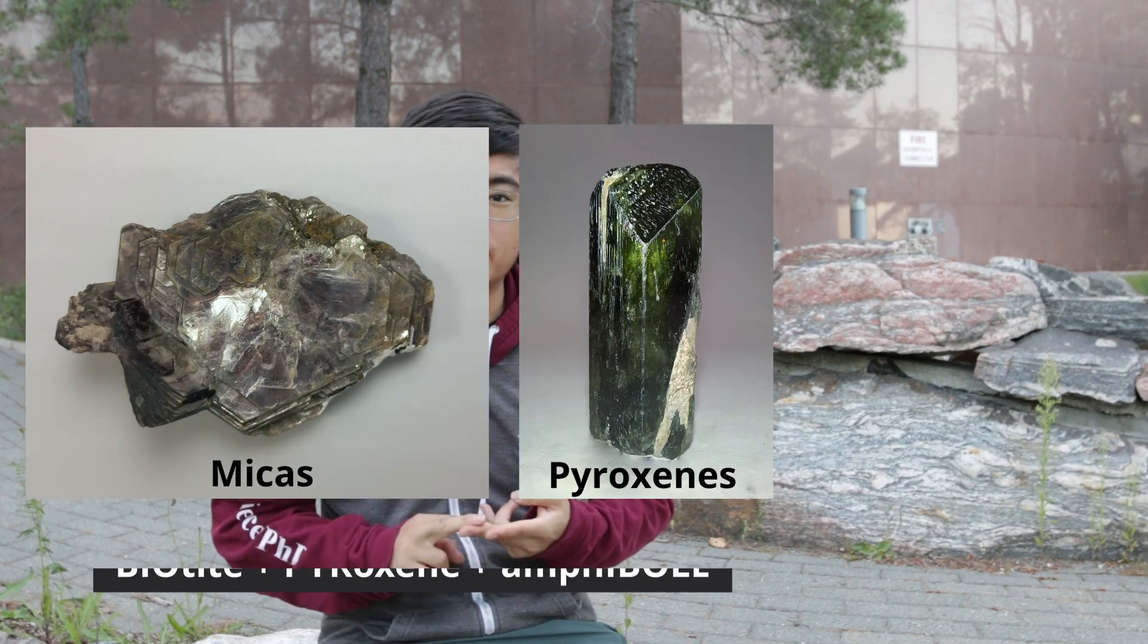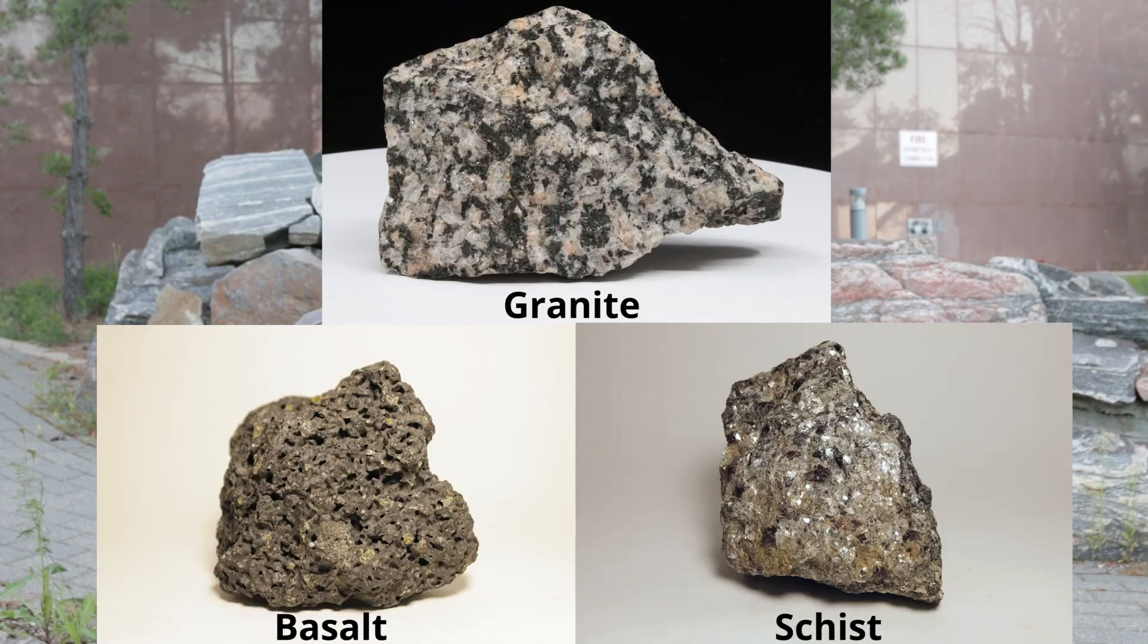A family of minerals known as the biopyriboles includes common minerals such as micas, pyroxenes, amphiboles and clays, which are found in soils and rocks such as granite, basalt and schist.